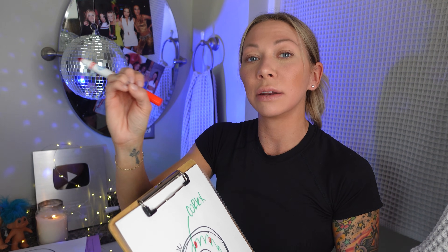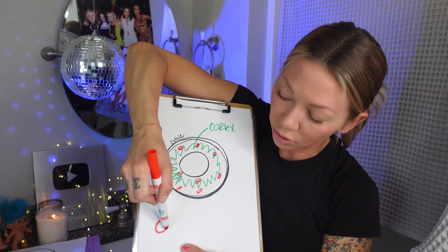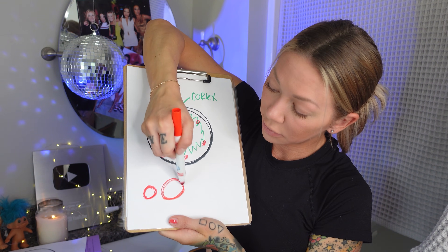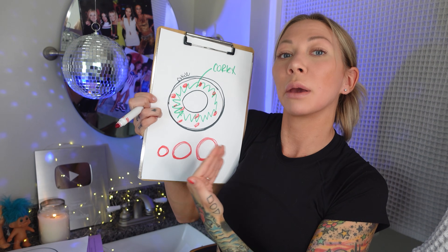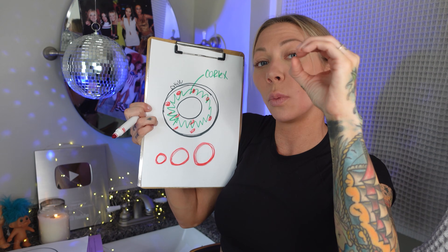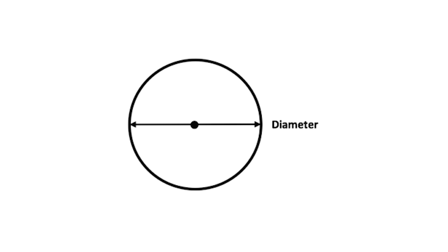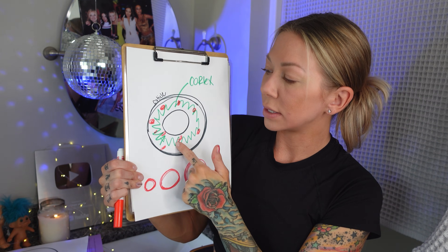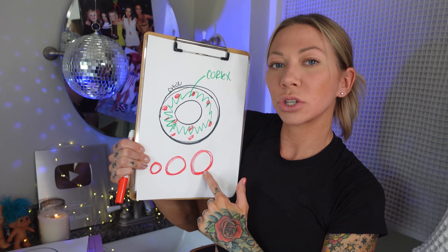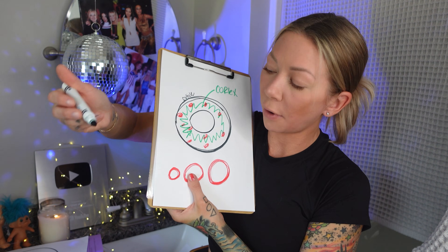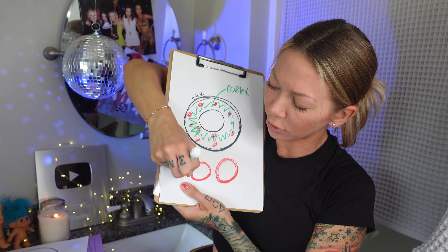Melanin granules range in size according to your hair texture. All texture is, is the diameter of an individual hair strand. You can have fine, medium, or coarse texture — small, medium, large. The texture is how big around your individual hair strand is — the diameter. The melanin in fine hair, like mine, is packed tightly together. They are grouped together tightly.